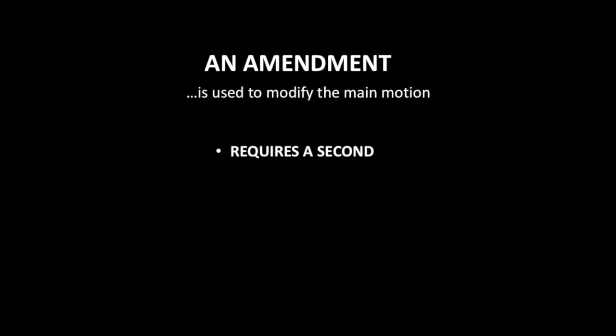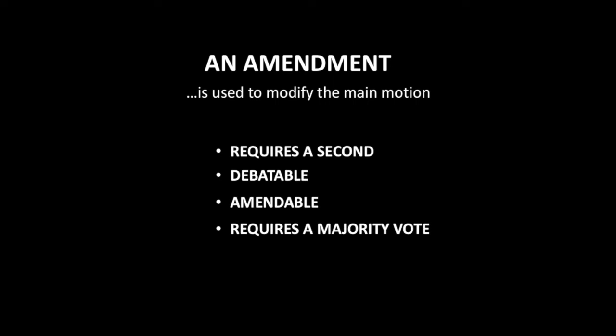Now let's add another step — we're going to amend the main motion. An amendment is used to modify the main motion. First, you must have a main motion so that there is something to amend. A second is required for an amendment to show that another member wishes the motion to be considered. Amendments are also debatable, amendable, and require a majority vote.